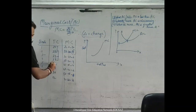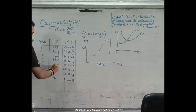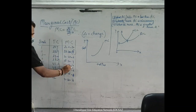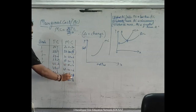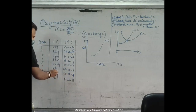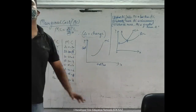Next: 42 minus 28 equals 4. Next: 48 minus 42 equals 6. Next: 56 minus 48 equals 8. Next: 72 minus 56 equals 16.